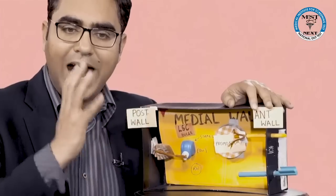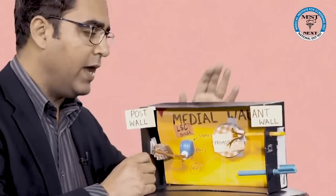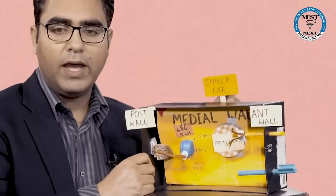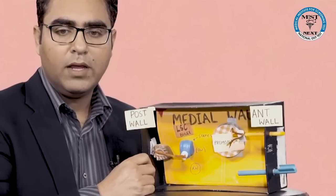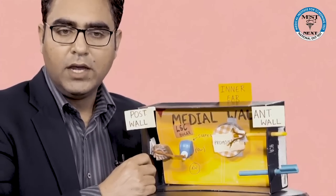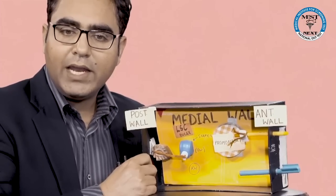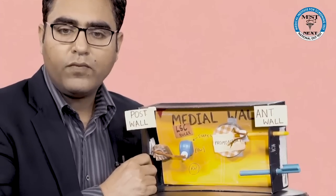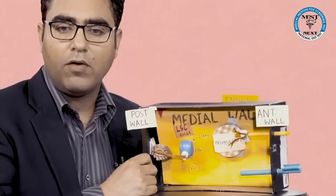Now let me come to the medial wall. The medial wall is that wall of the middle ear which separates it from the inner ear. So behind the medial wall lies the inner ear — the inner ear is hidden behind it. Imagine, behind the medial wall lies the inner ear. The inner ear wants to show off, but you can't see it as it is hidden behind the medial wall.